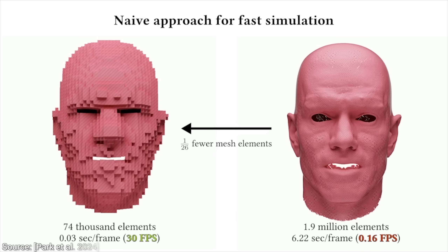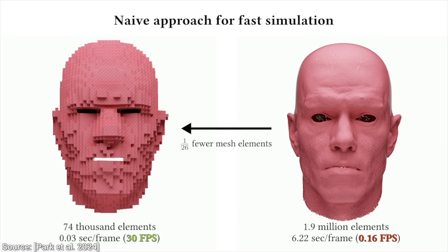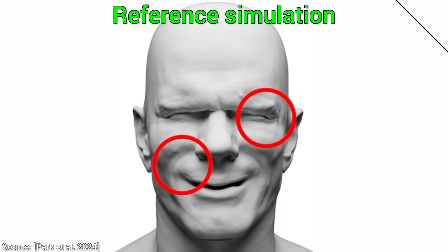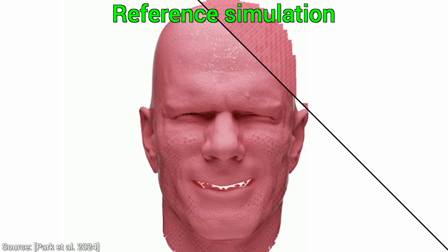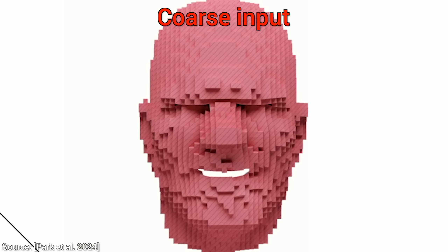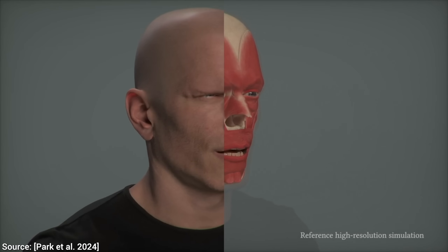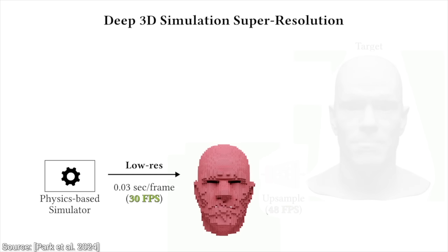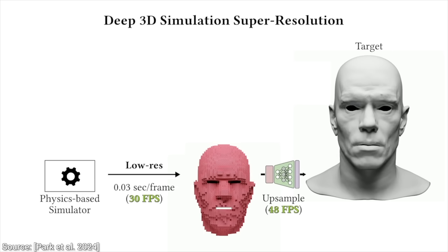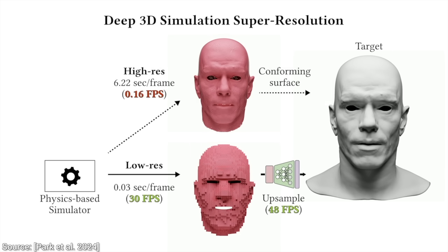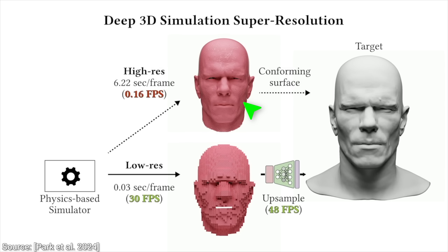If you just try a coarse simulation and upscale it, you will get a completely different result, because the topology of your model is different than the real, detailed model. You are simulating a completely different person — how would that be useful? But they did it somehow. Here is a genius idea: yes, AI, you are allowed to do the super-resolution, but at the same time, use the knowledge of what you have learned from higher resolution simulations.